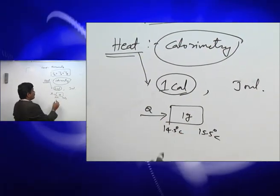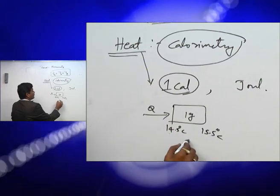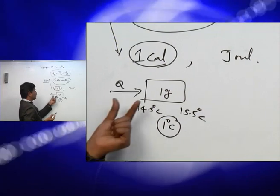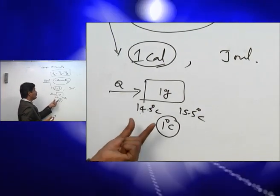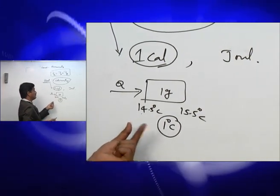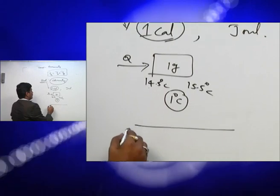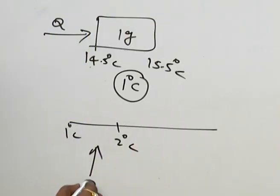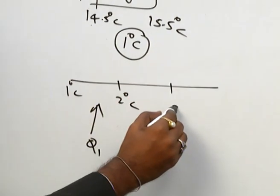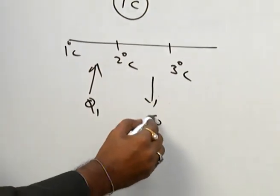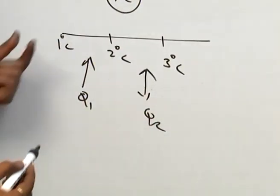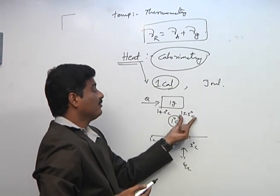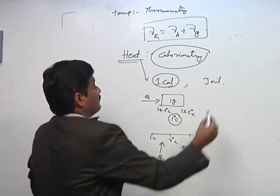Why do we use 14.5 to 15.5 instead of simply 1 degree centigrade? Because the heat supplied to 1 gram of water can vary depending on the temperature range. For example, the heat required from 1°C to 2°C (Q1) differs from 2°C to 3°C (Q2). Hence, we take the standard temperature difference from 14.5 to 15.5 degrees centigrade.